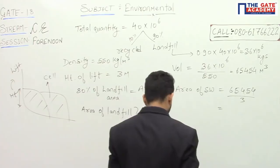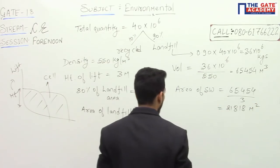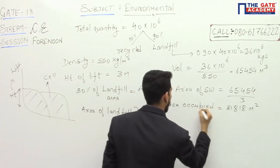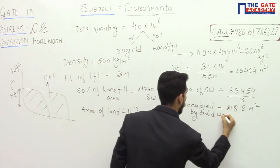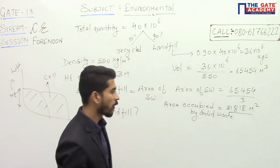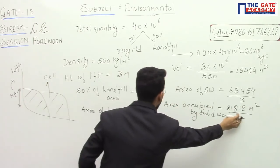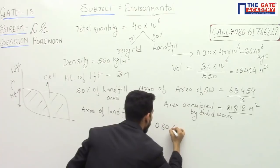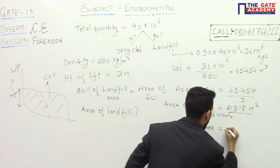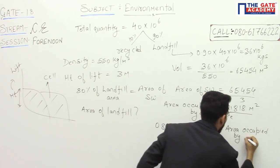So the area occupied by solid waste is 21,818 m². But this is not what is being asked — we need the total area of the landfill. We know that 80% of the landfill area is occupied by solid waste, and we have this area, so: 0.80 × landfill area = area occupied by solid waste.